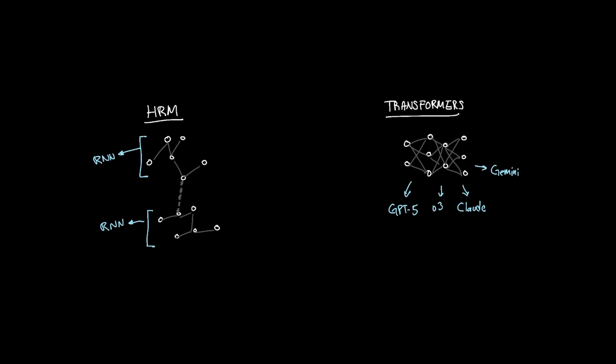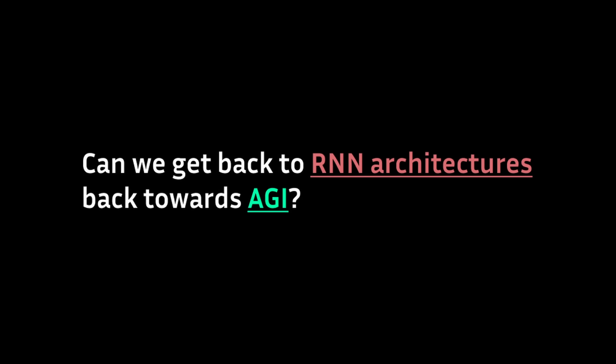So back to the comparison, we can't really compare HRM with GPT-based models because they're completely different architectures that do completely different things. Instead, I think we should be asking the question, can we get back to RNN-based architecture and achieve a better result towards AGI?